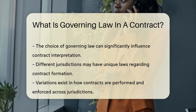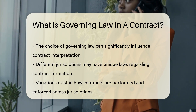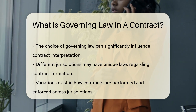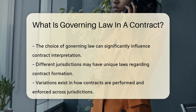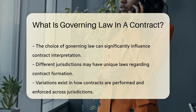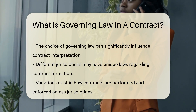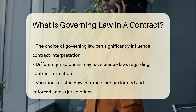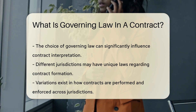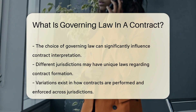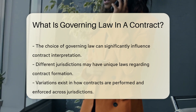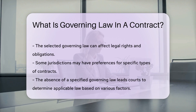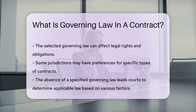Different jurisdictions may have varying laws regarding contract formation, performance, and enforcement. Selecting a governing law can influence legal rights and obligations. For instance, some jurisdictions may favor certain types of contracts or provide specific remedies.